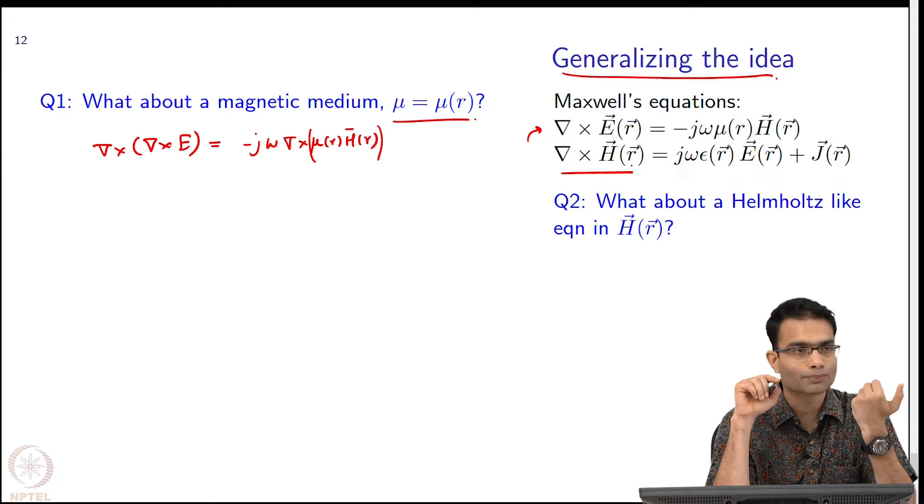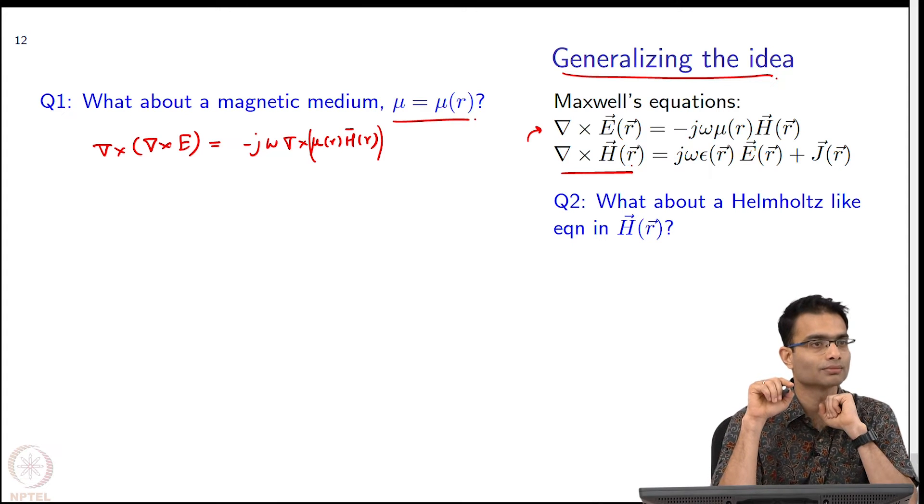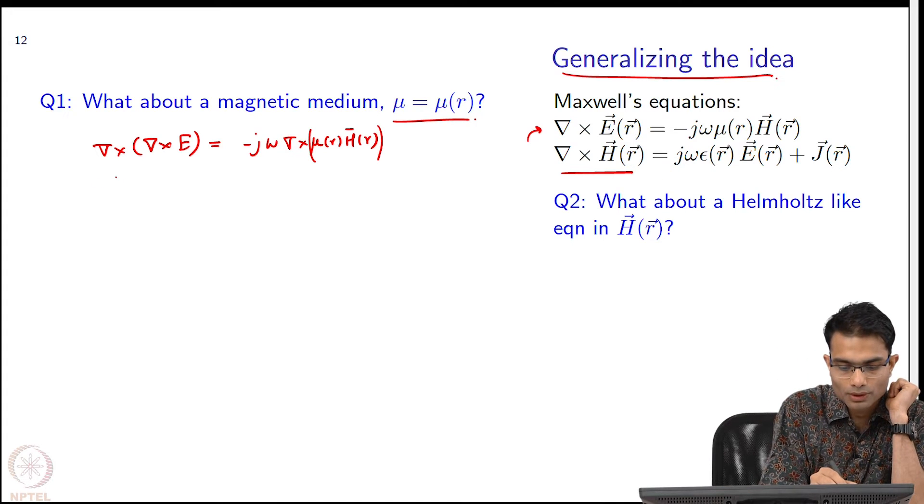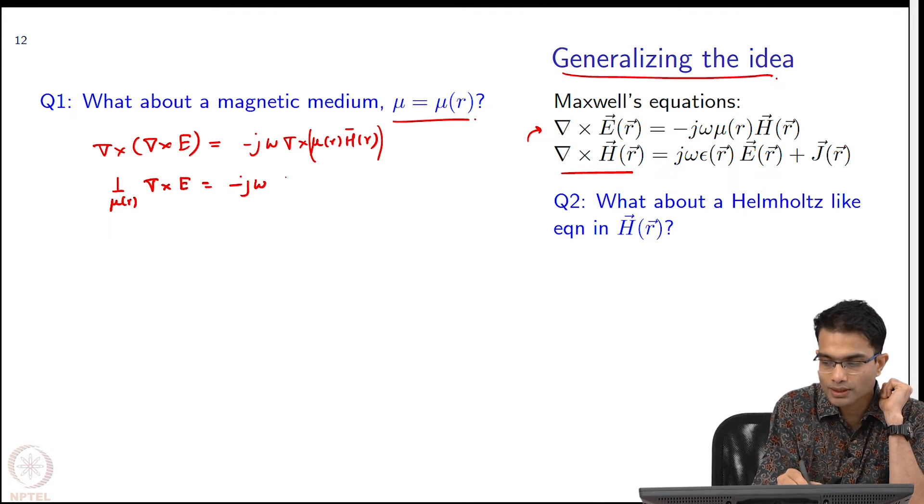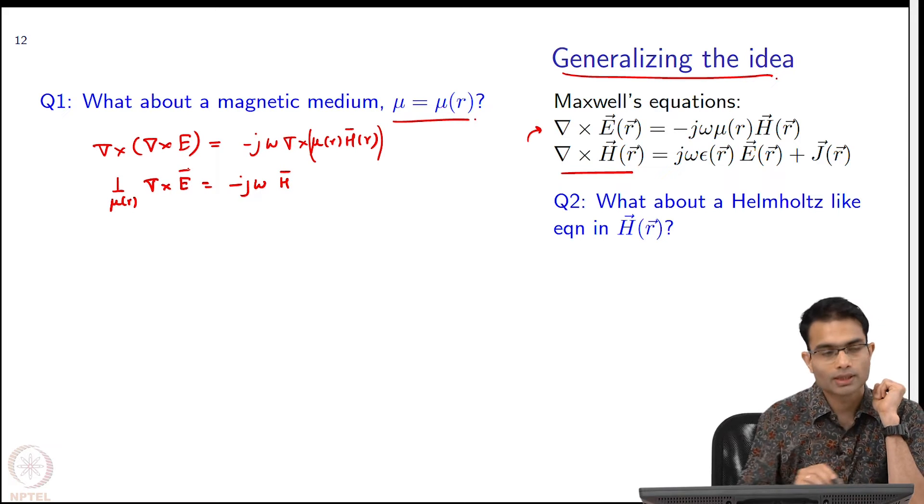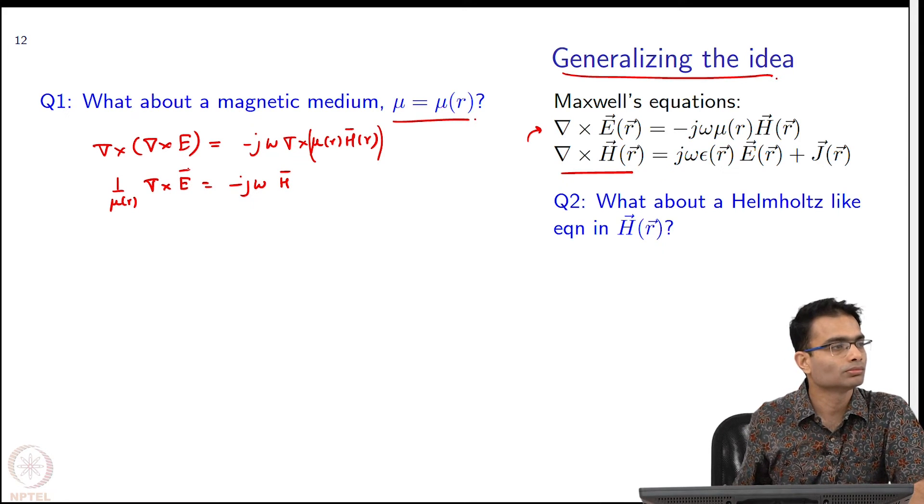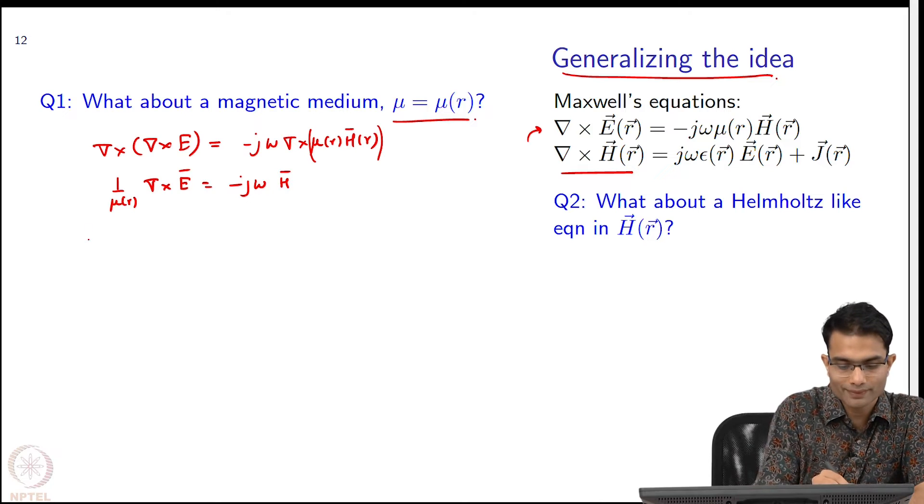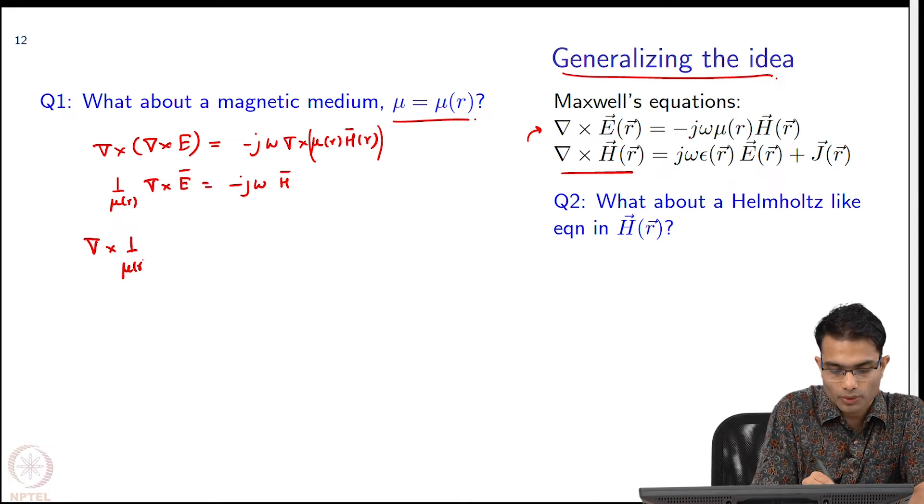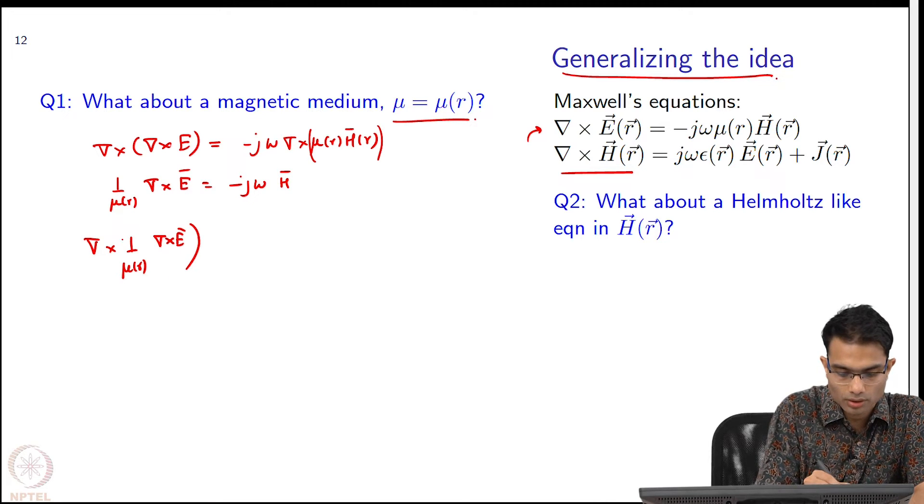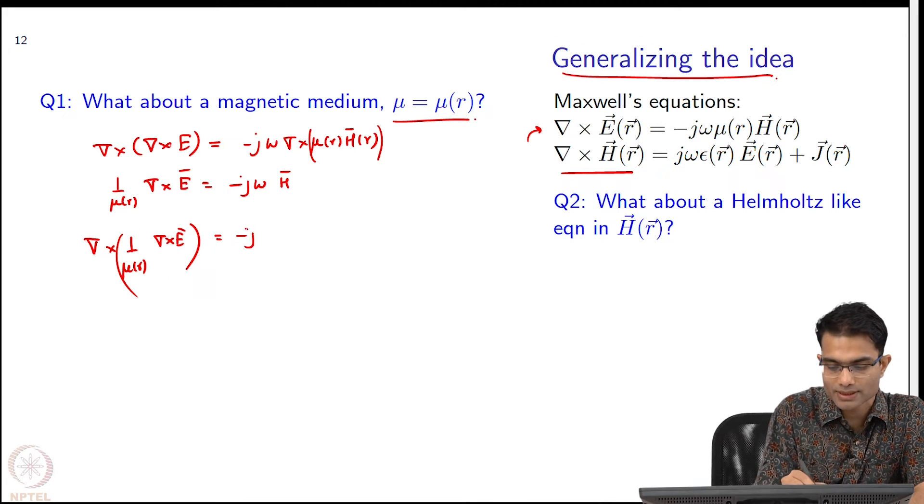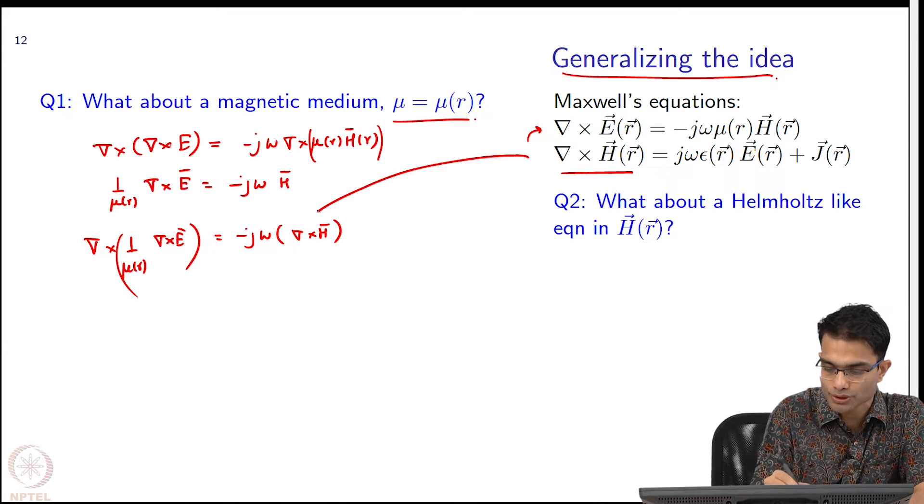Take mu to other side. Take mu, supposing I take mu to the other side. So, supposing I do 1 by mu r del cross E is equal to minus j omega H. Can I take a curl now on both sides? So, I will get del cross 1 by mu r del cross E is equal to minus j omega del cross H and then I can substitute over here.